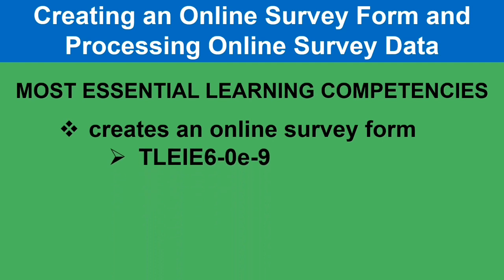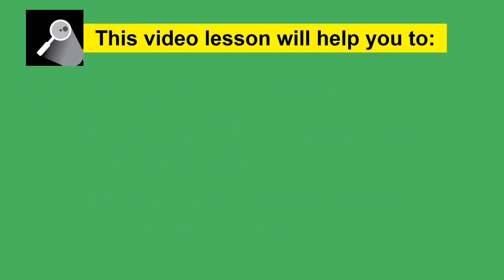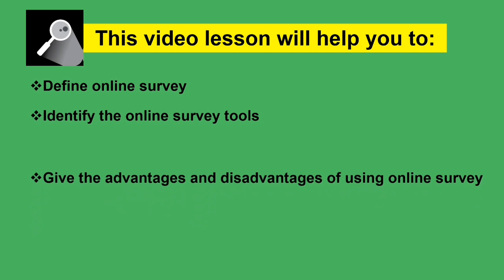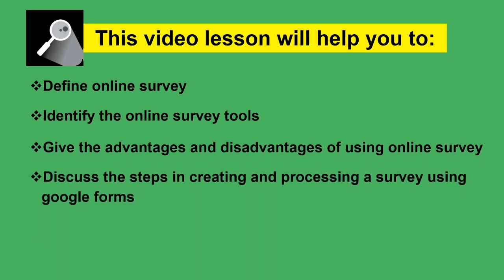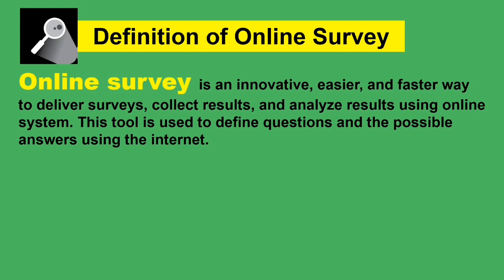Our Most Essential Learning Competencies: creates an online survey form, code TLE-IE 6-0-8-9; processes online survey data, code TLE-IE 6-0-8-11. This lesson will help you define online survey, identify online survey tools, and give the advantages and disadvantages of using online survey.